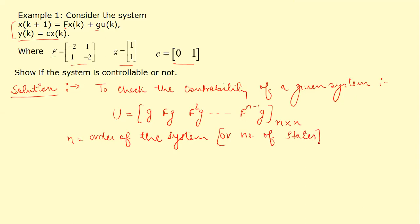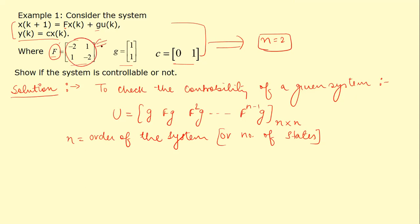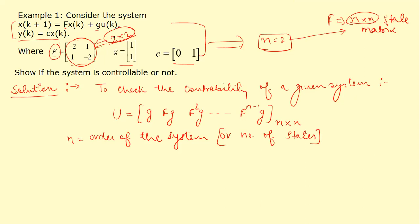In this particular example, n is 2. We can determine n from the F matrix — since F is a 2×2 matrix, and F is the n×n state matrix, that means n equals 2. So the order of the system is 2.